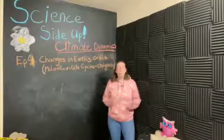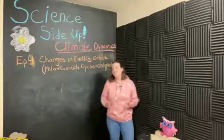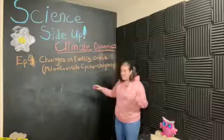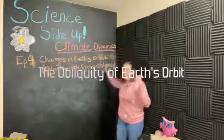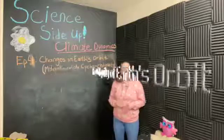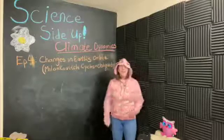Hey team, I'm Maddie. Welcome to Science Side Up, and today we're going to continue our discussion of Milankovitch cycles, which is the second factor: the obliquity of Earth's orbit. Yes, I'm wearing a ridiculous unicorn hoodie, and I love it.